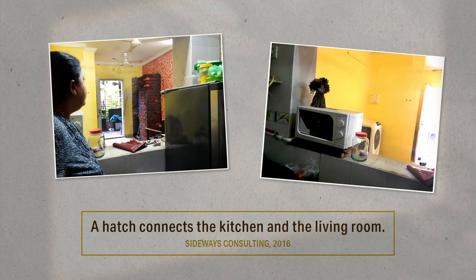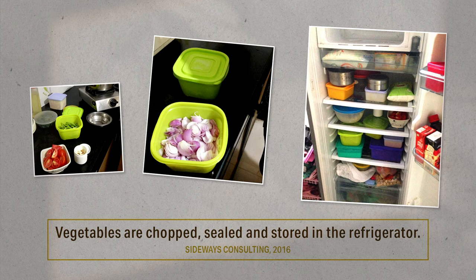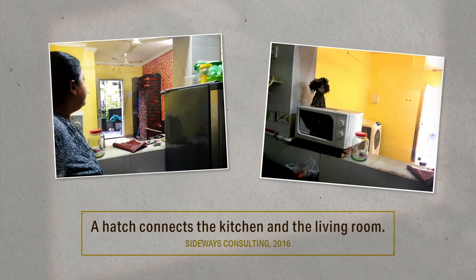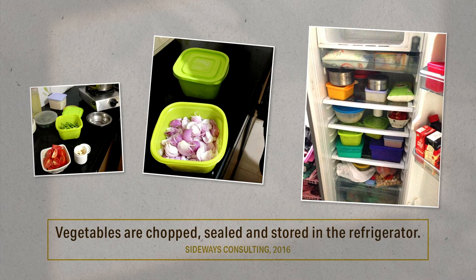Let us do a small activity here. Here are pictures from a kitchen in a household. The pictures tell us something very particular about the household and its members. Can you note down what you learn from these pictures about the people who use this kitchen? These are images from an ethnographic research into kitchens and practices of cooking. The household is that of a middle-class urban nuclear family. Some of you might have noted the wide hatch that connects the kitchen with the sitting room area, and guessed that it ensures convenience and ease of serving food. Another image shows a number of vegetables chopped and stored in the fridge — likely to make the task of cooking easier and quicker.